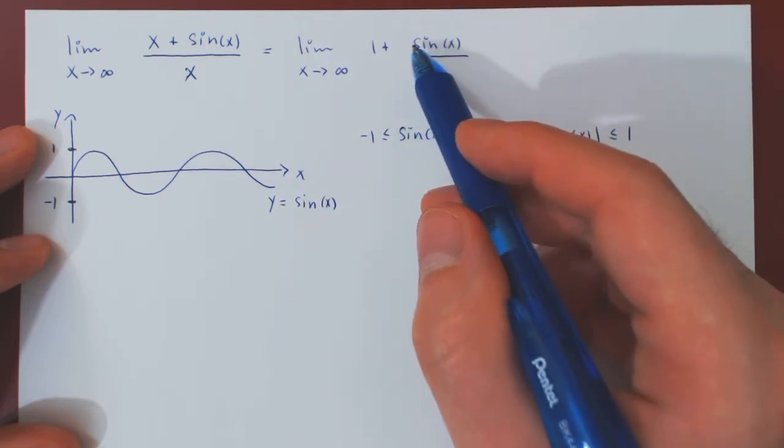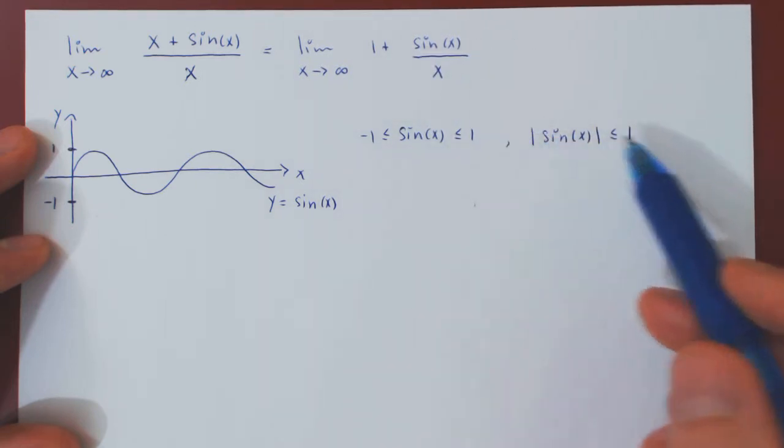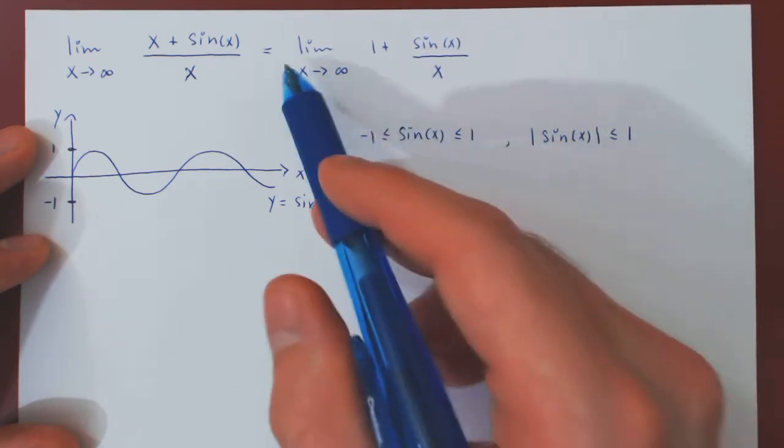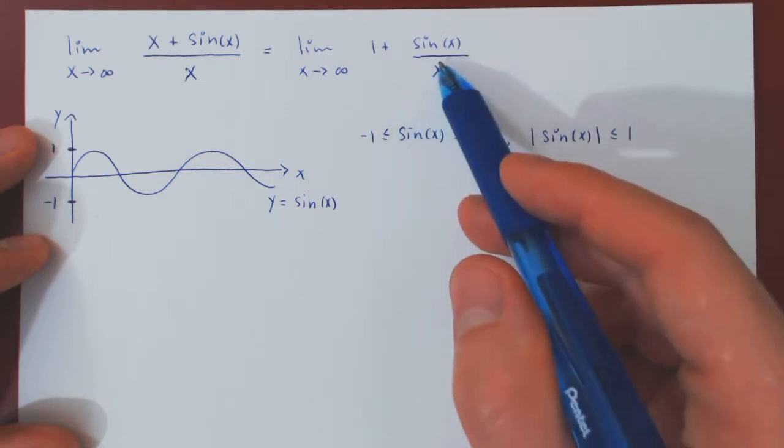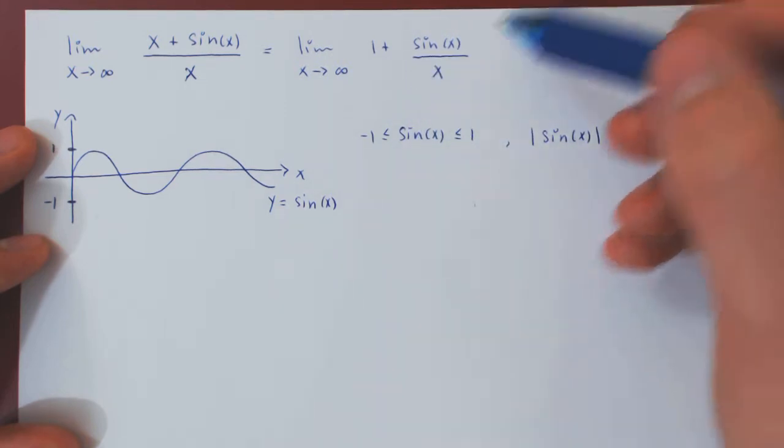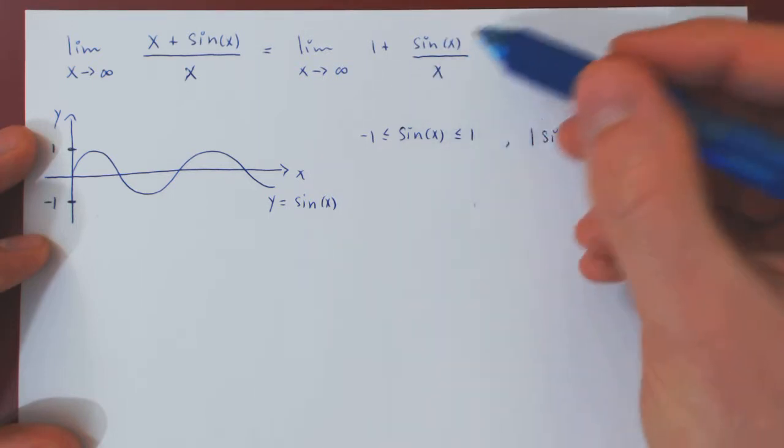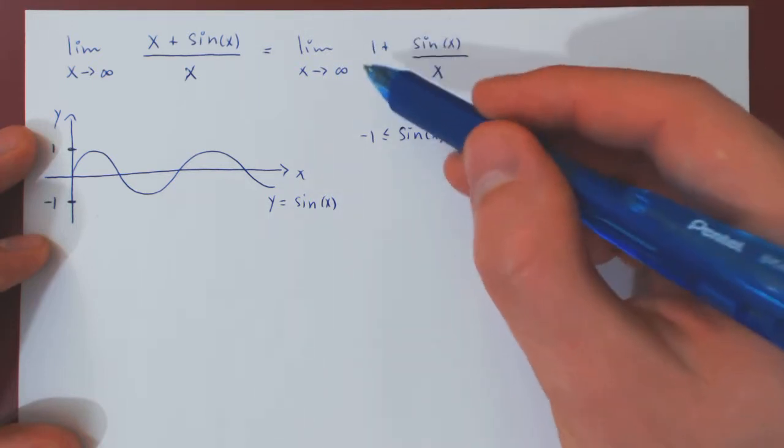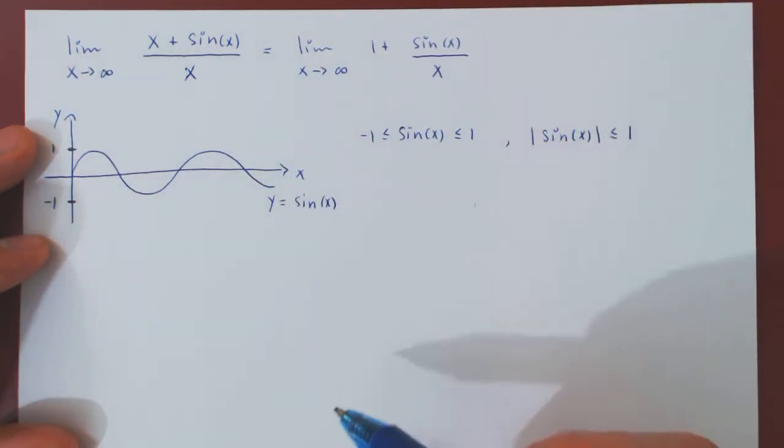So, we have here a quotient of two functions. The one on top is never exceeding 1 in absolute value. And the one on the bottom is getting larger and larger and larger. So, the intuition here is that this limit should be equal to 0. So, this should shrink to 0. And, therefore, we should be left with quite simply 1. So, the original limit should be equal to 1.